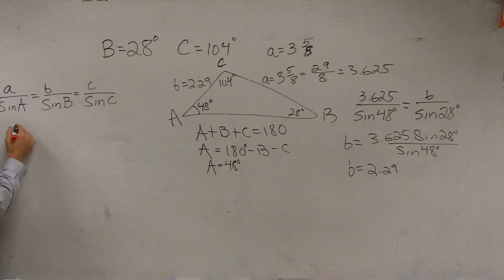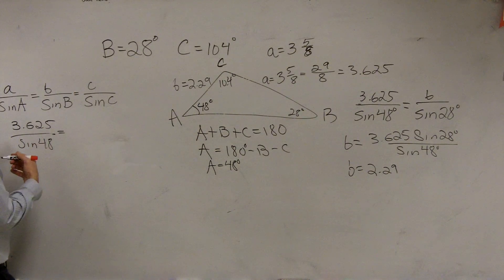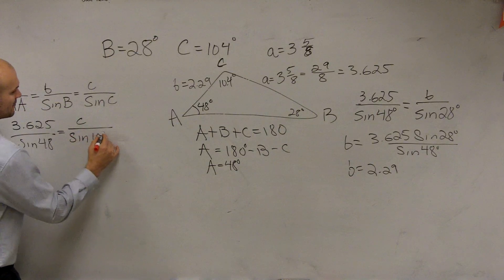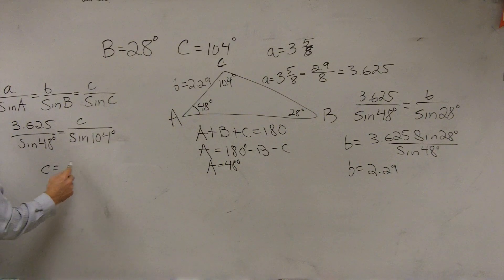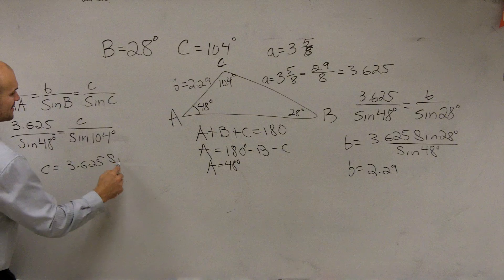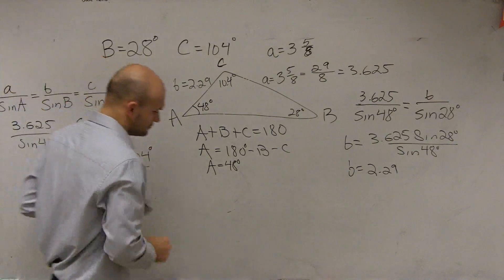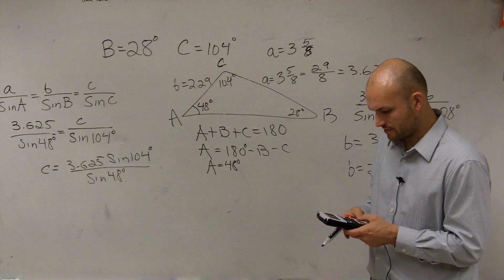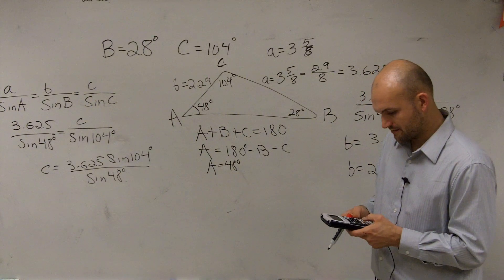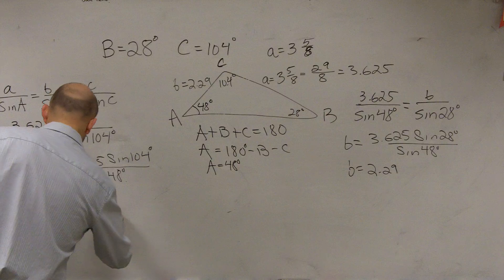Now let's find C. I'll use the same ratio of A: 3.625 over sine of 48 degrees equals C over sine of 104 degrees. Cross multiplying, C equals 3.625 times sine of 104 degrees divided by sine of 48 degrees. Doing that in the calculator: 3.625 times sine of 104, divided by sine of 48, gives 4.73. So C equals 4.73.